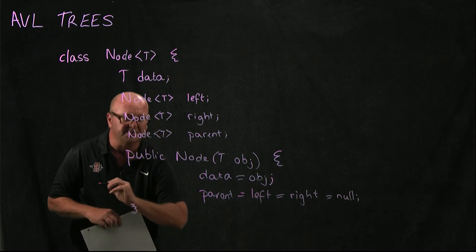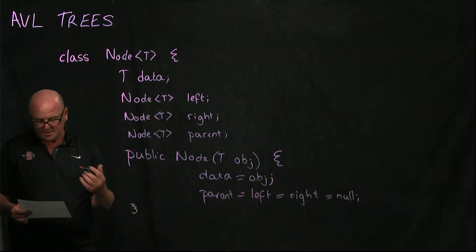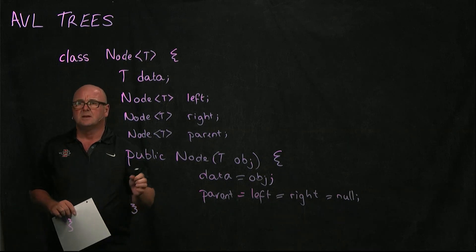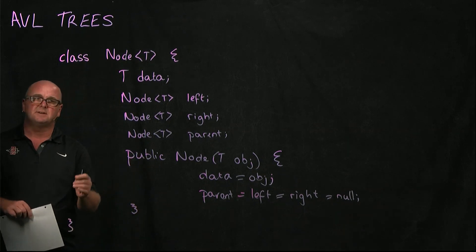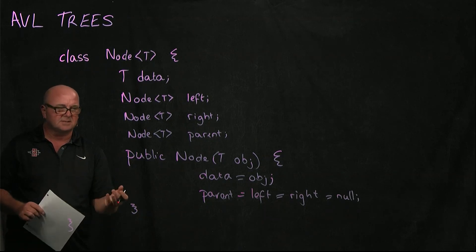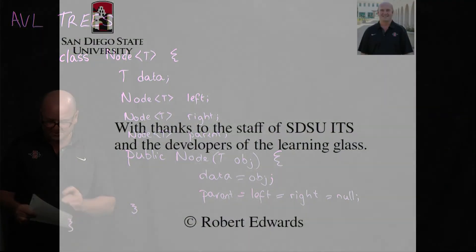That initiates those so that later on, we can set them as we need. So this is our node class for our AVL tree. It's got everything that we need to store the data and to connect left and right children.